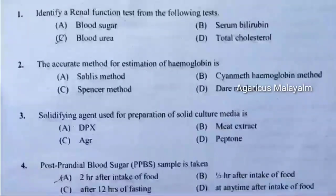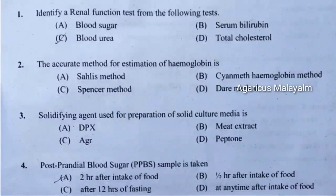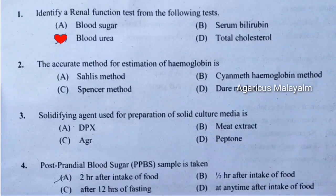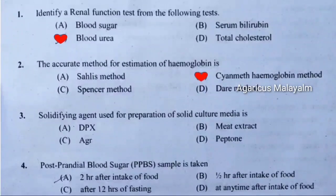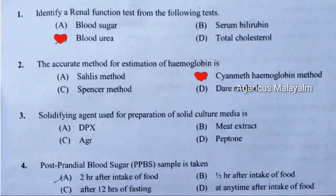First question: Identify a renal functional test from the following. Correct answer is option C — blood urea. Second question: The accurate method for estimation of hemoglobin is. Correct answer is option B — cyan meth hemoglobin method. Third question: Solidifying agent used for preparation of solid culture media. Correct answer is option C — Agar.